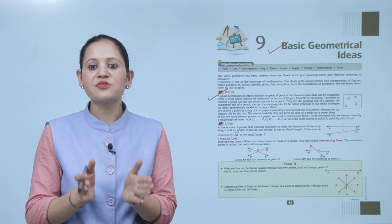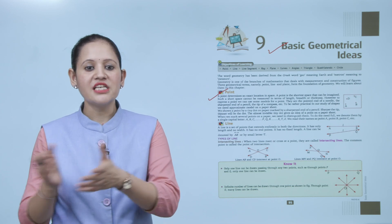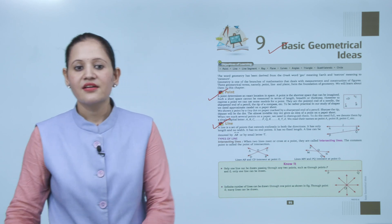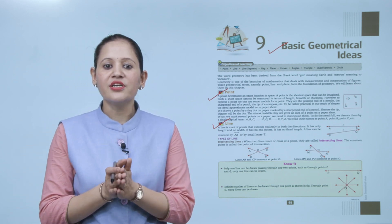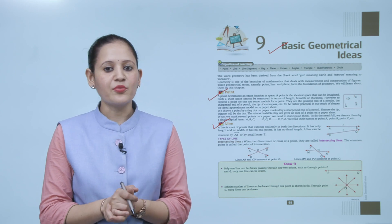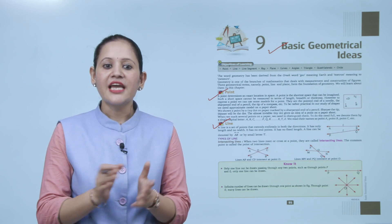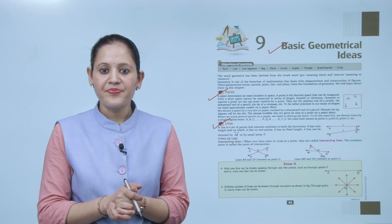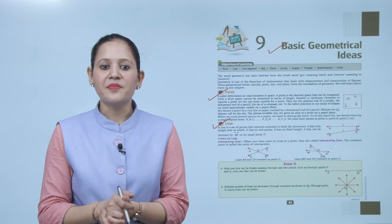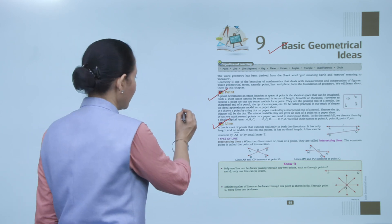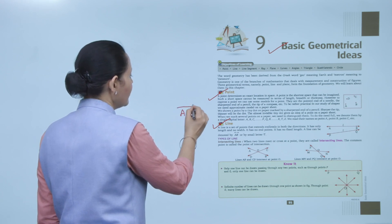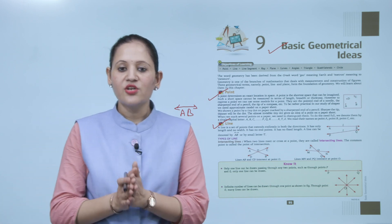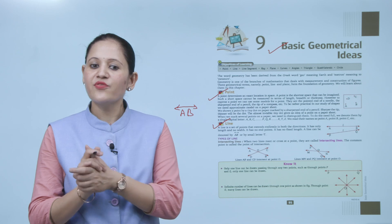Next is line. A line is a set of points that extend endlessly in both directions. It has only length, no width, no endpoints, and no fixed length. A line is denoted by a double-sided arrow symbol, meaning it can be extended endlessly in both directions — it has no fixed length.